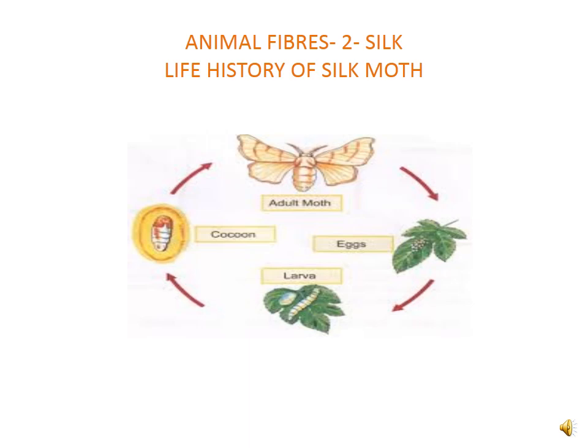You can see all these stages: adult moths, then eggs, then larvae, as well as the cocoon. The silk fibers are used for weaving silk clothes. The silk yarn or thread is obtained from the cocoon of silk moths.